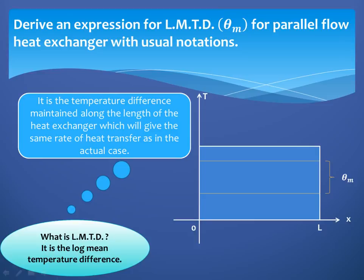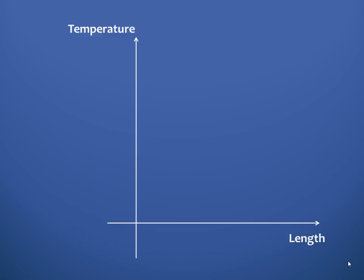On the x-axis we have the length of the heat exchanger, with boundary conditions at x = 0 and x = L. For a parallel flow heat exchanger, both the hot fluid and cold fluid move in the same direction. The constant temperature difference θ_m, maintained throughout the length of the heat exchanger, is known as the Log Mean Temperature Difference, and it gives the same heat transfer rate as in the actual case.